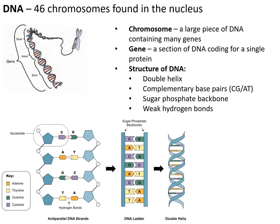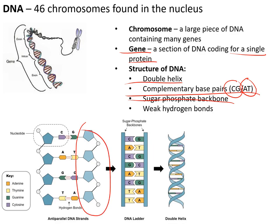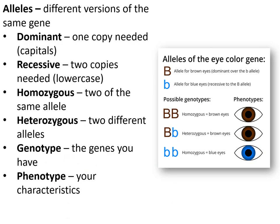Topic three: genetics. DNA is made up of chromosomes — a chromosome is a large piece of DNA containing genes, which are sections of DNA coding for a single protein. DNA has a double helix structure with complementary base pairs C-G and A-T, a sugar-phosphate backbone, and weak hydrogen bonds joining the bases down the middle.